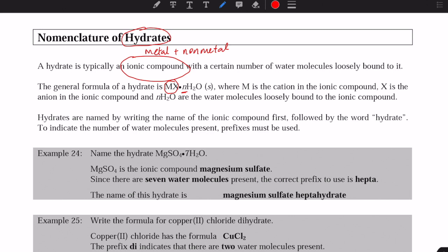For example, here's a formula of a hydrate: MgSO4, that's the ionic compound. Then you put a dot - that's an important part - showing that there's a certain number of water molecules bonded to the MgSO4, in this case 7H2O.